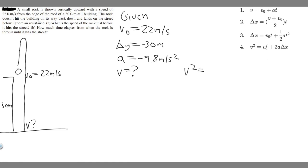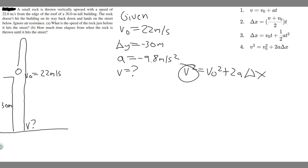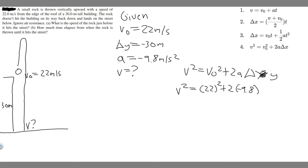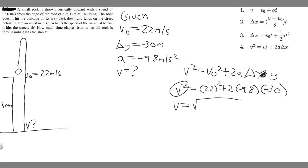Use the formula: v squared equals v₀ squared plus 2a times delta y. All we have to do is plug in and solve for v — the velocity as it hits the ground. So v squared equals 22 squared plus 2 times a, which is minus 9.8, times our change in y, which is minus 30. Taking the square root of the whole thing: square root of (22 squared plus 2 times minus 9.8 times minus 30).